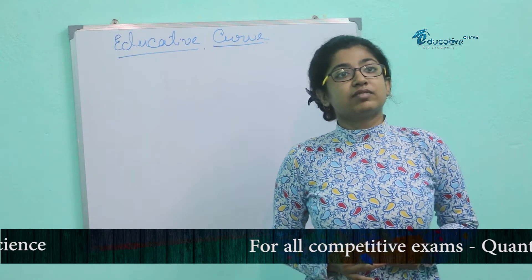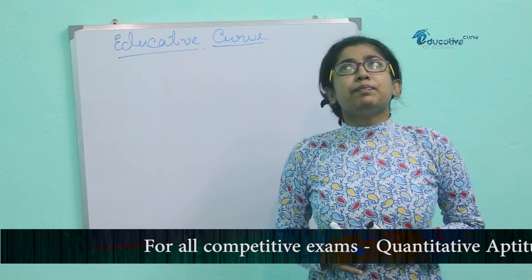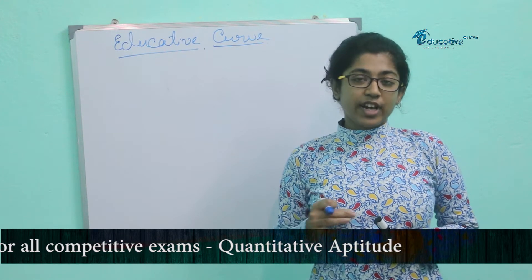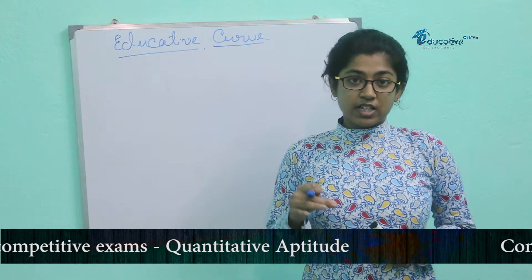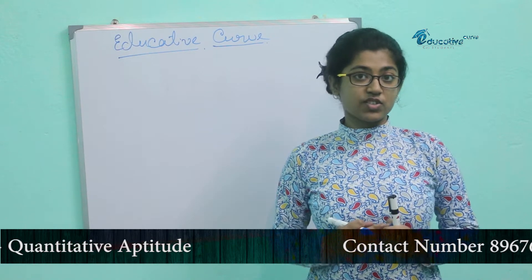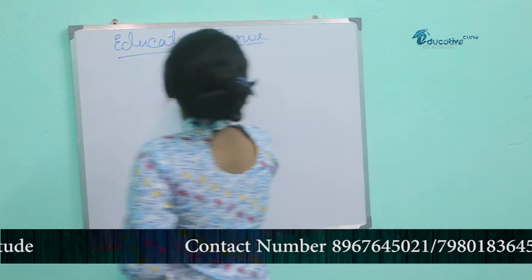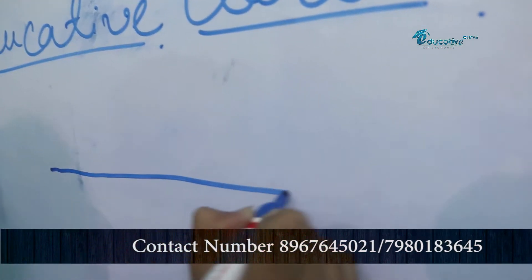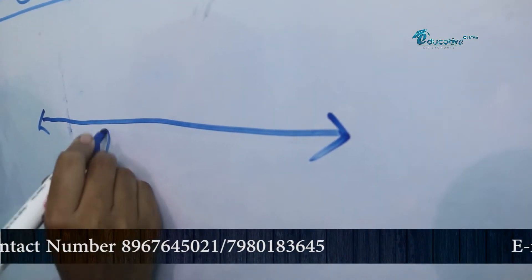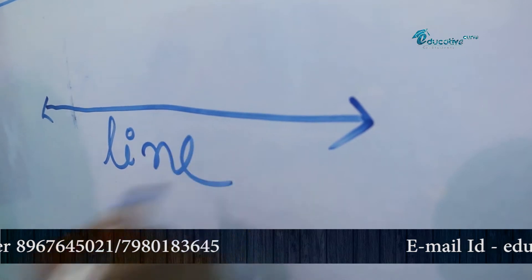What is a line? Mathematically, we can say that a straight path that extends endlessly in both directions is called a line. This is a straight path which is extended in both directions endlessly — that is called a line.